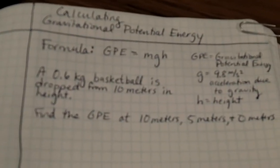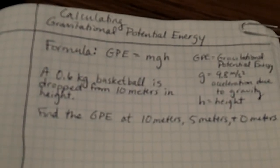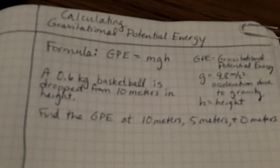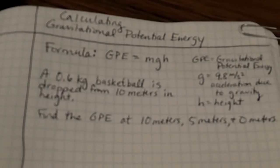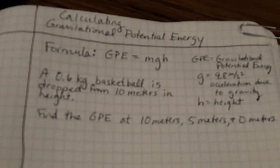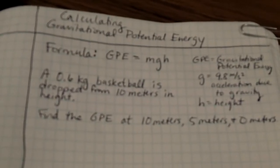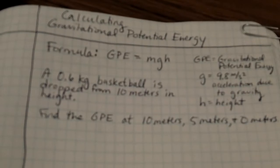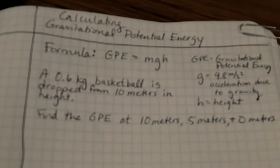Let's take out our notebooks and take some notes about gravitational potential energy, particularly calculating gravitational potential energy. Up to this point we've talked about gravitational potential energy and we realized that the higher something is above the ground, the more gravitational potential energy that object has. But today we're going to actually look at calculating that. So let's make sure that we title our notes and start to write down a formula.